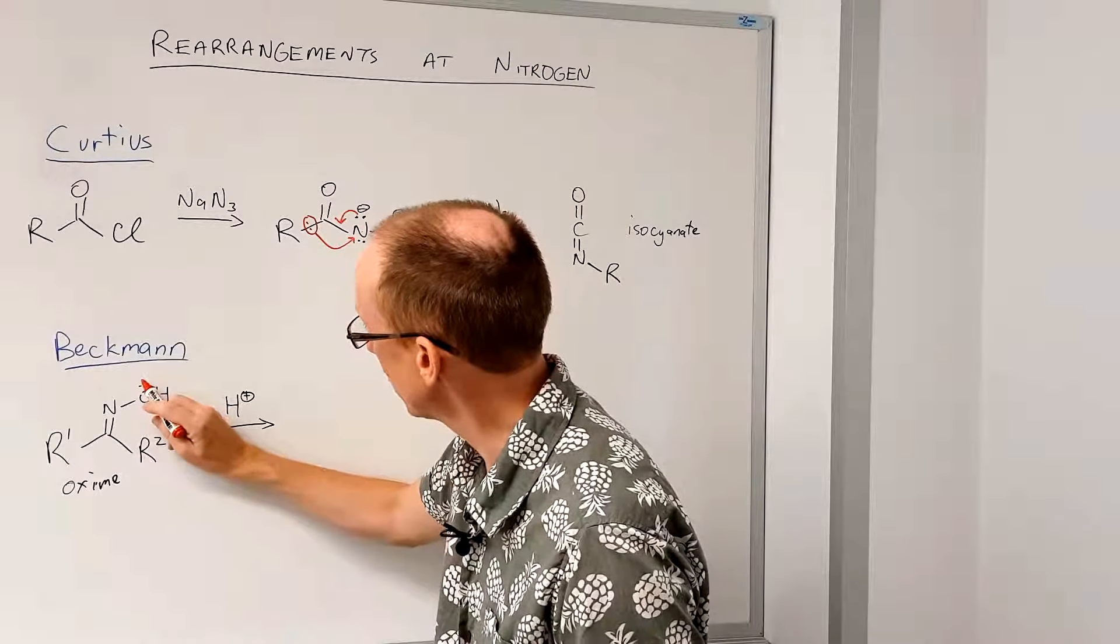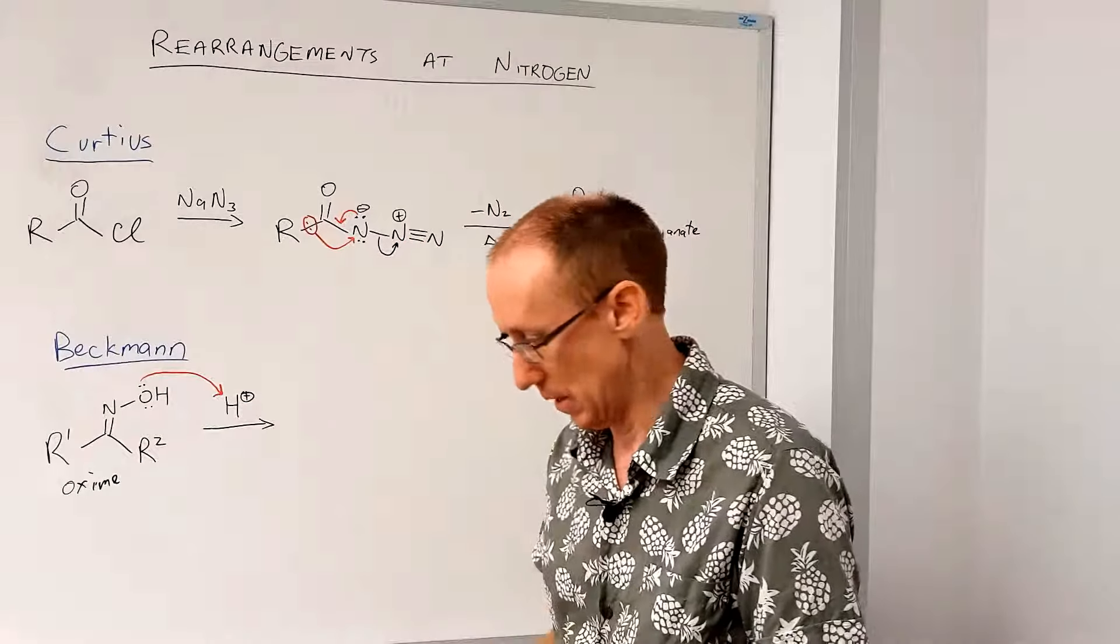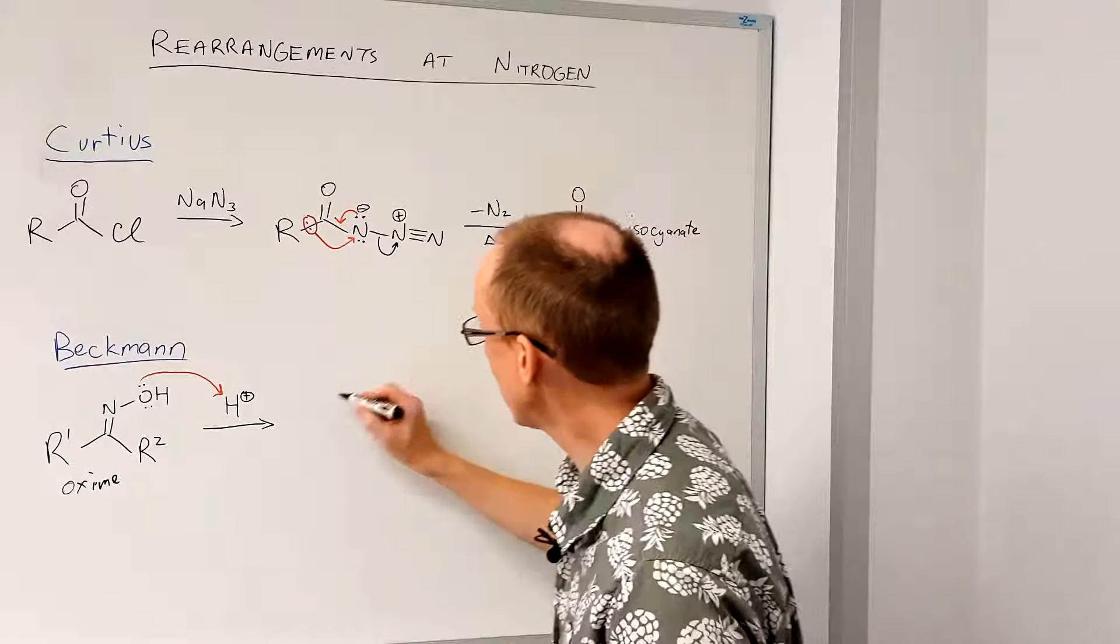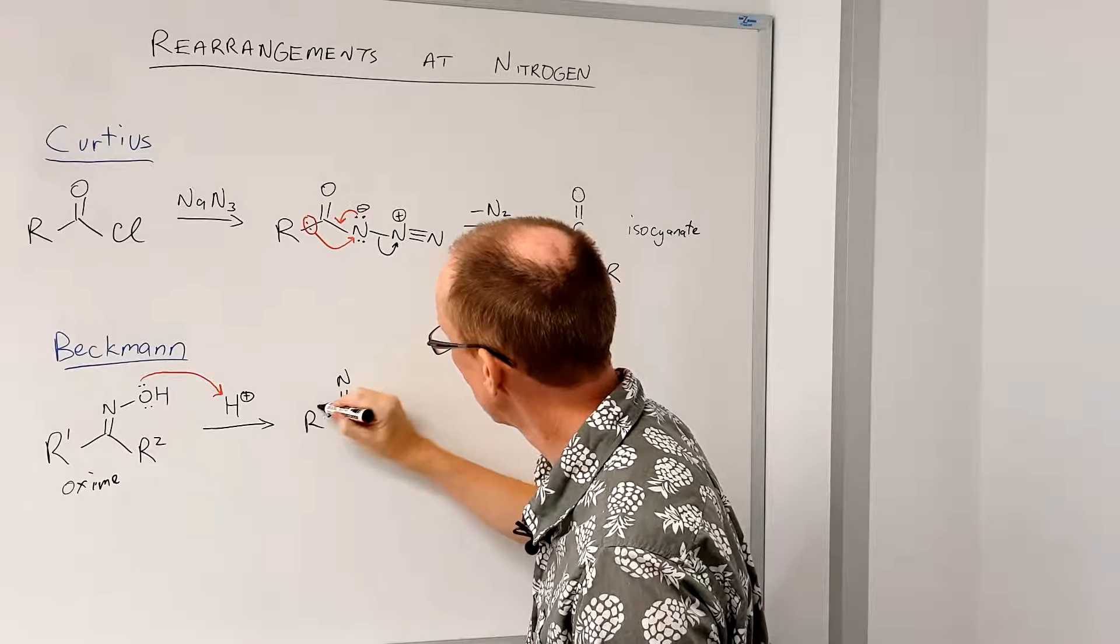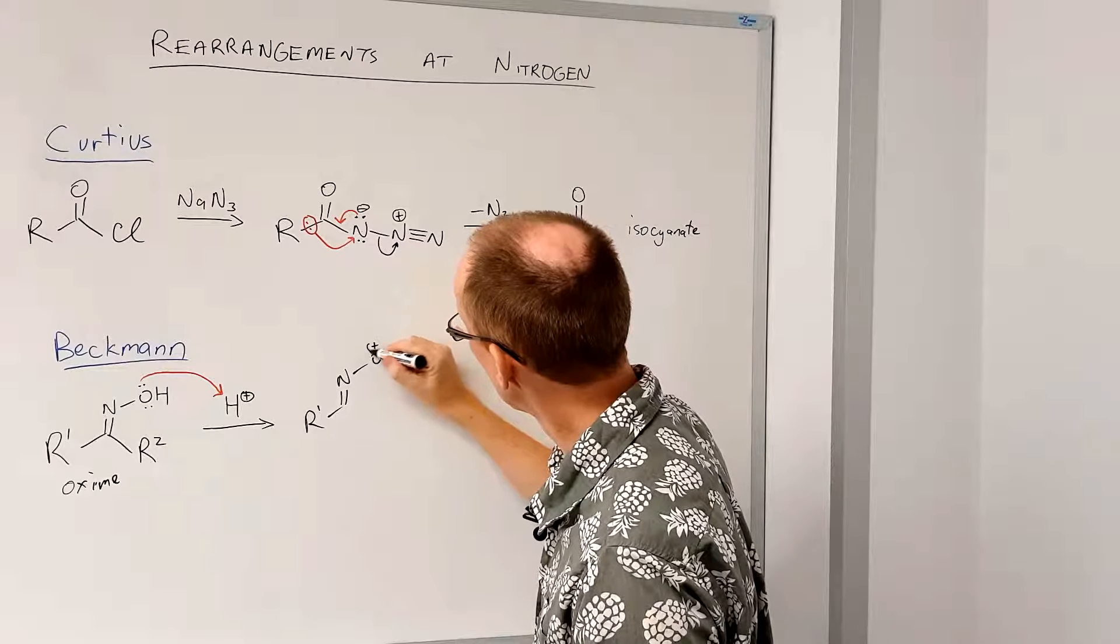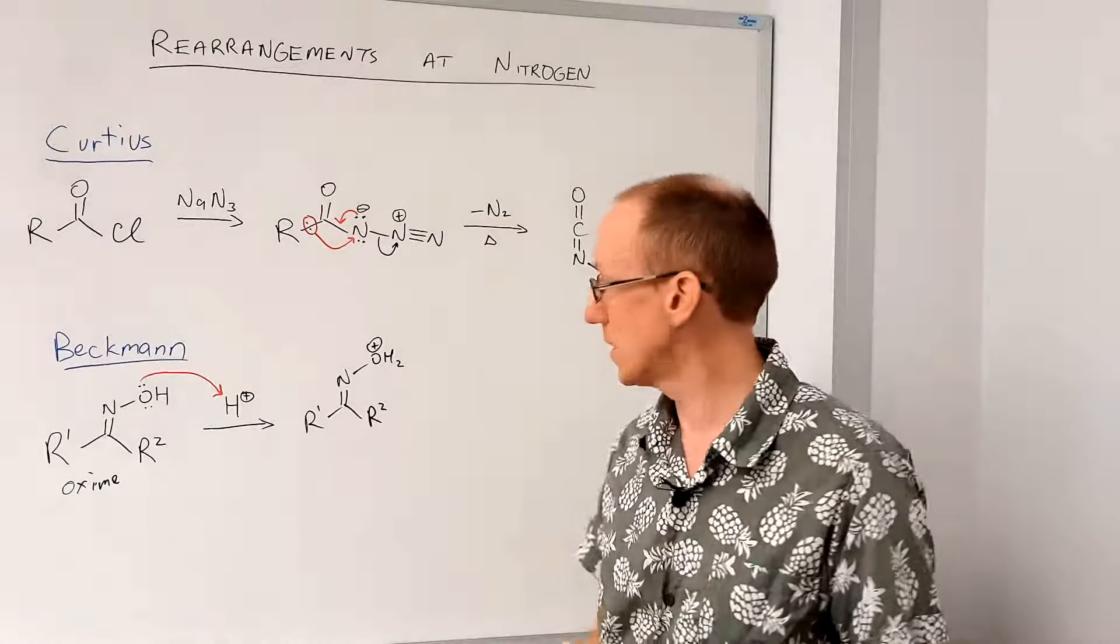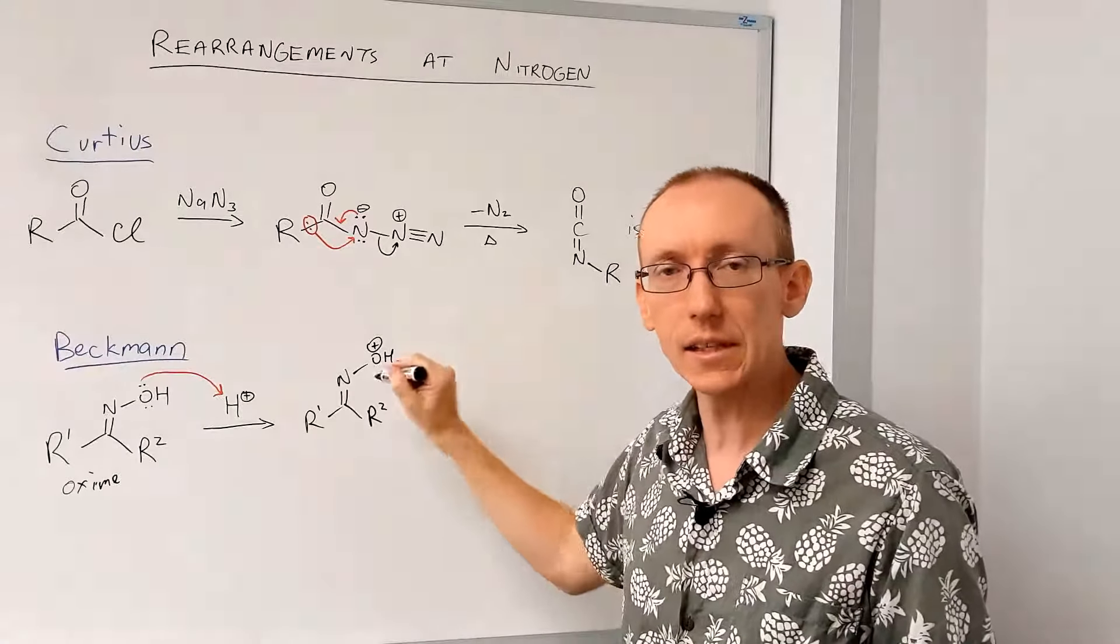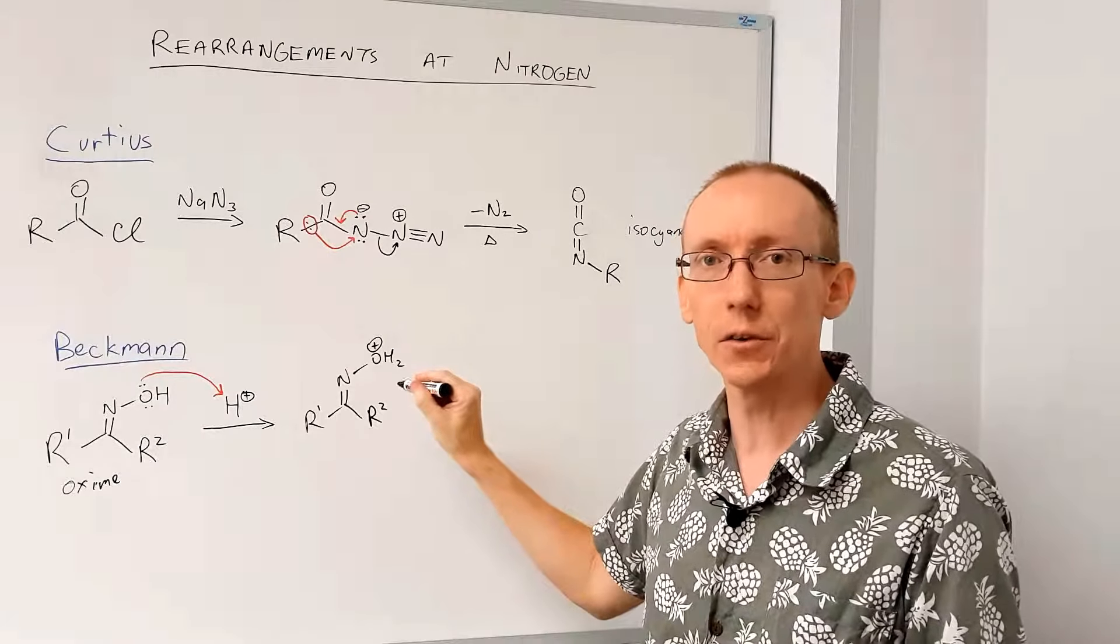So we can protonate this oxygen of the oxime and generate that intermediate. Okay, there it is there. Now OH2+, whenever you see this in organic chemistry, you should be thinking, oh, excellent, I've got a great leaving group. What am I going to do with that leaving group?